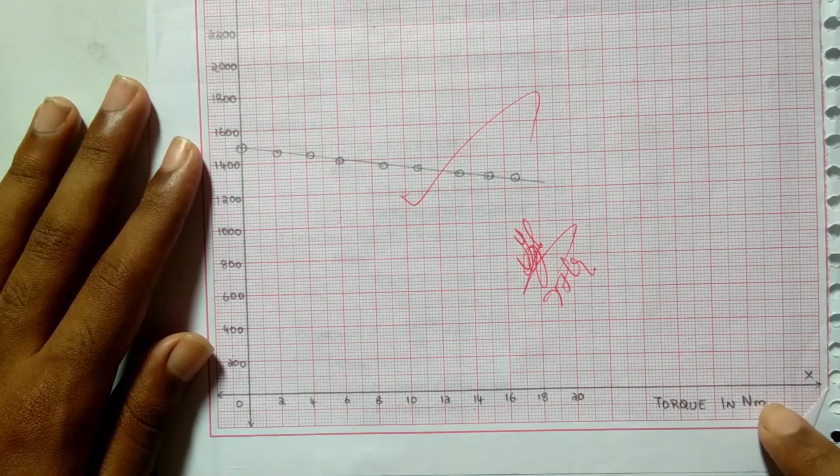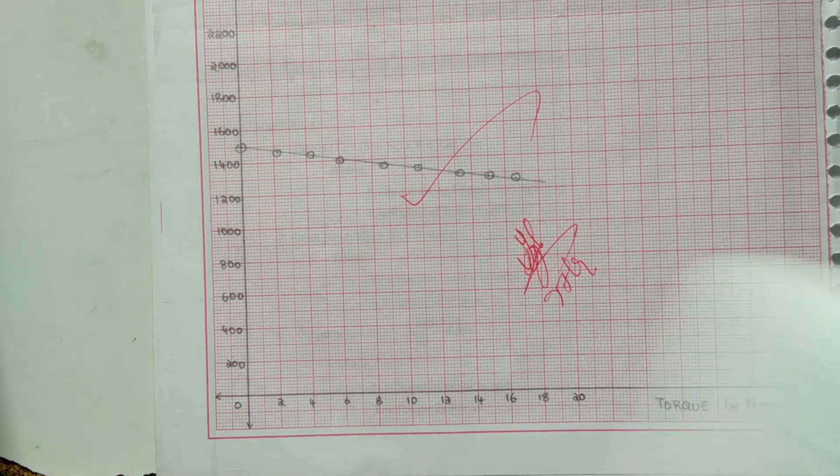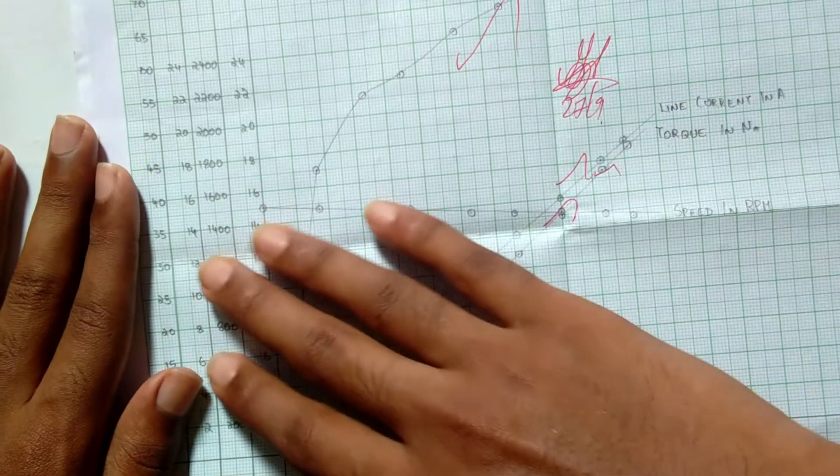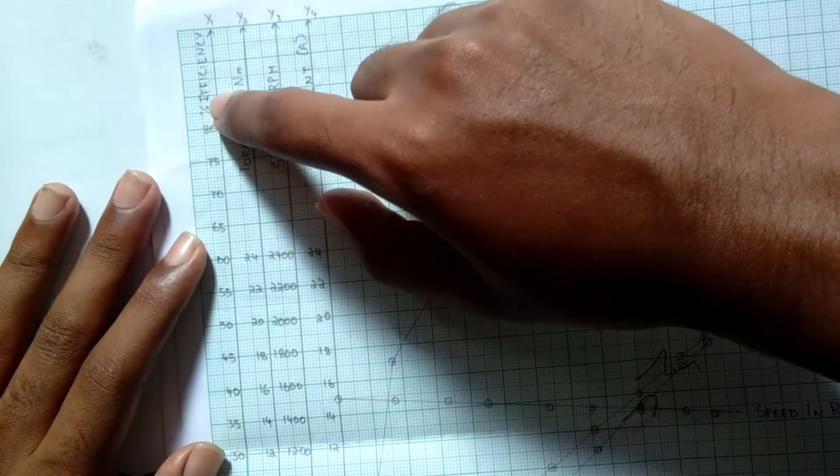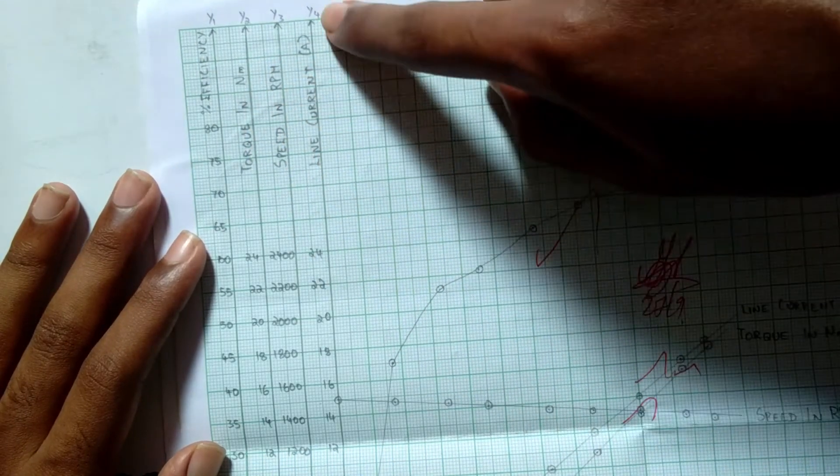The second graph is a little bit difficult to draw because we have taken four y-axes: one is efficiency, another is torque, another speed, and line current. In the x-axis we have taken output power.